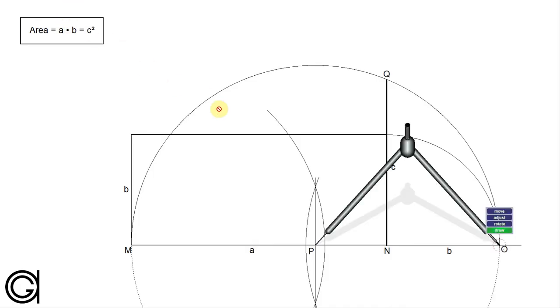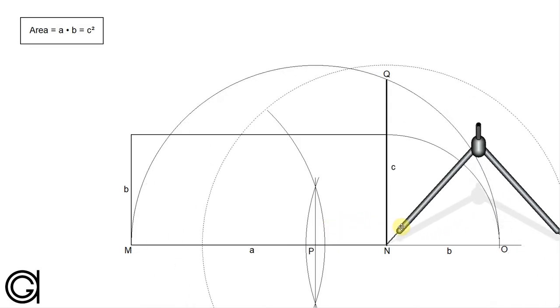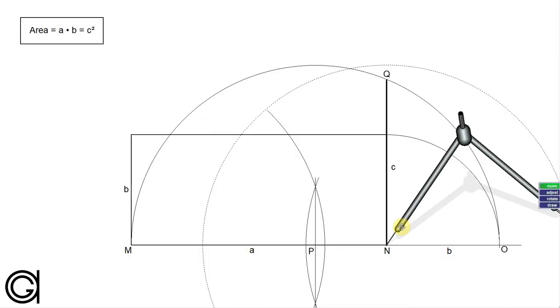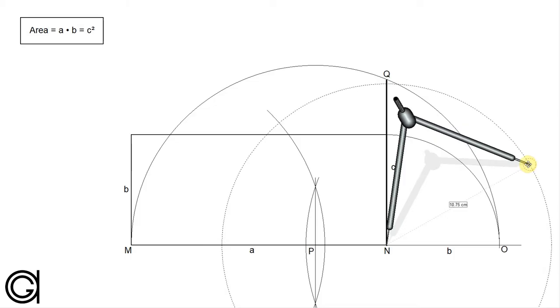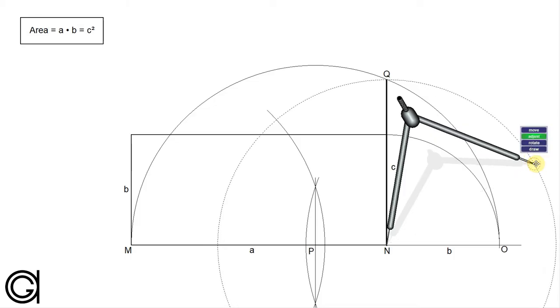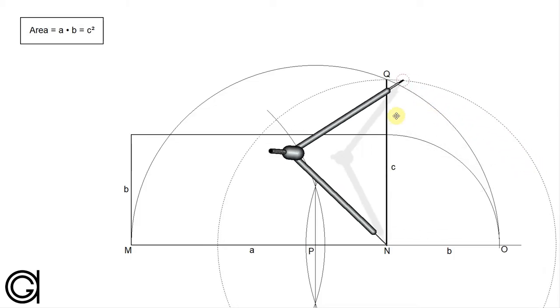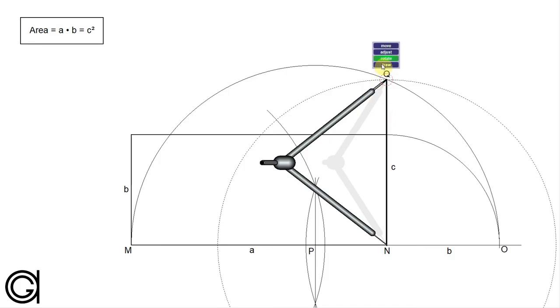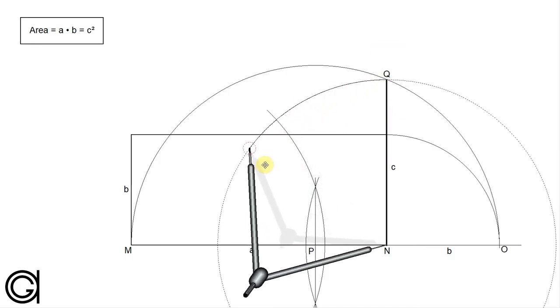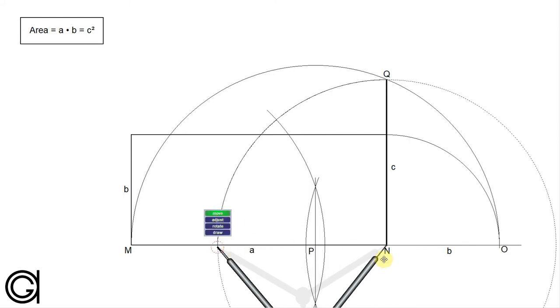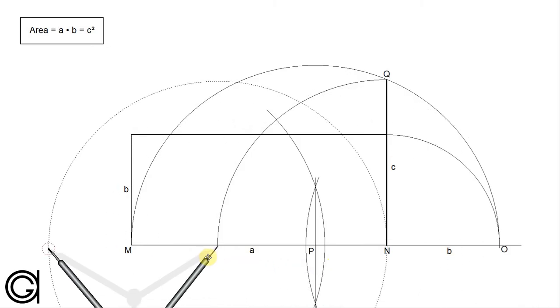Now we are going to use the compass to locate the other two vertices of this square. Setting the compass on point n with a length n q, which is the side of our square, we scribe an arc to the left until it cuts the line segment m n at the third vertex of our square.